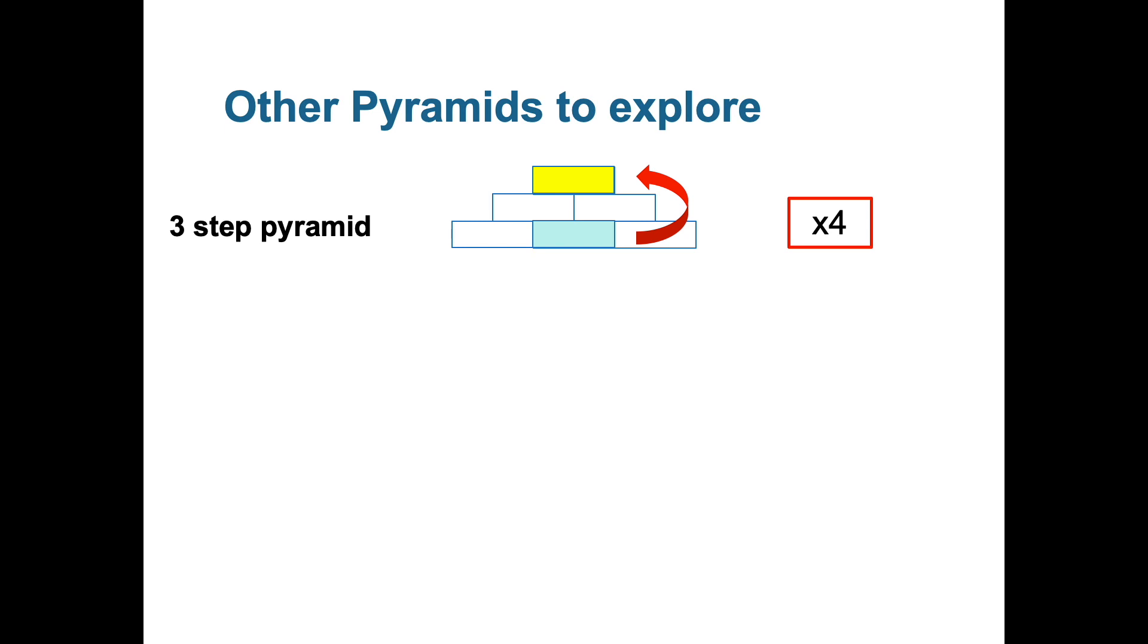The three step pyramid clearly has a rule then of multiplying by four from the middle at the bottom to get the answer at the top. To save a bit of time, there's similar rules as well.